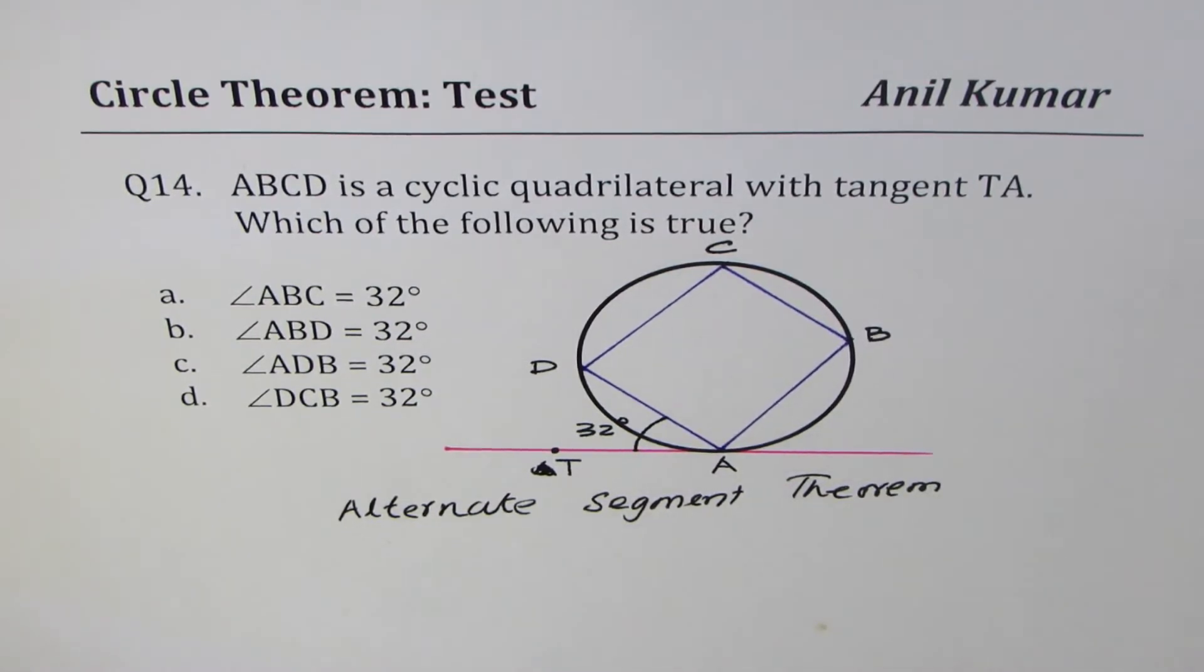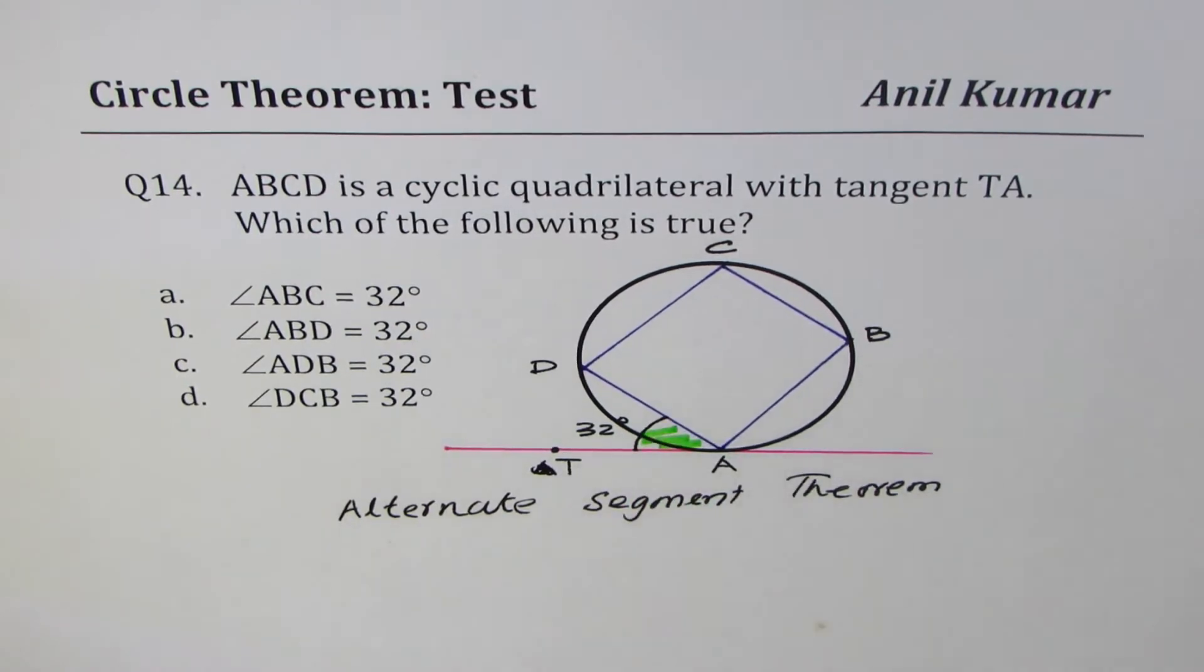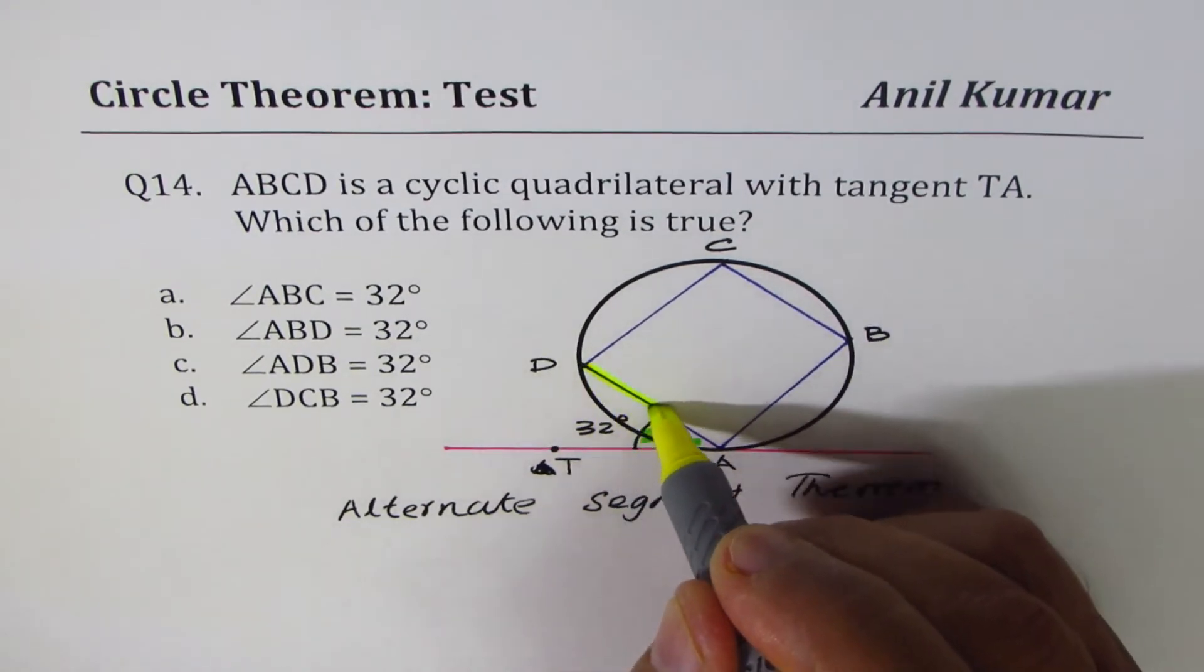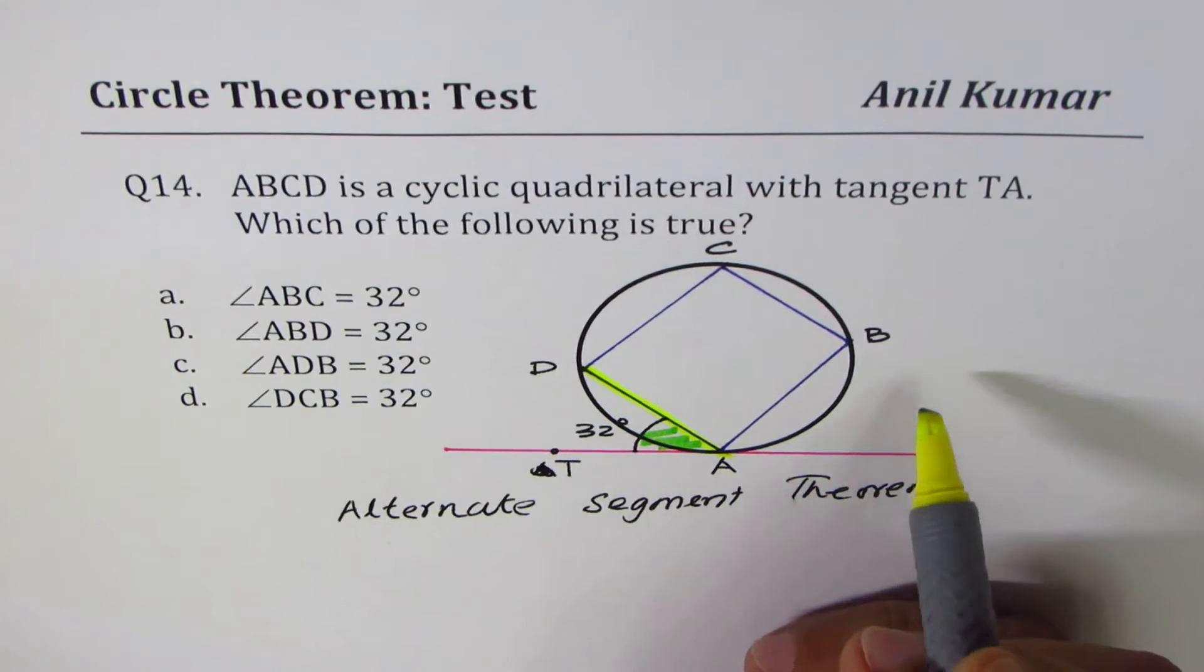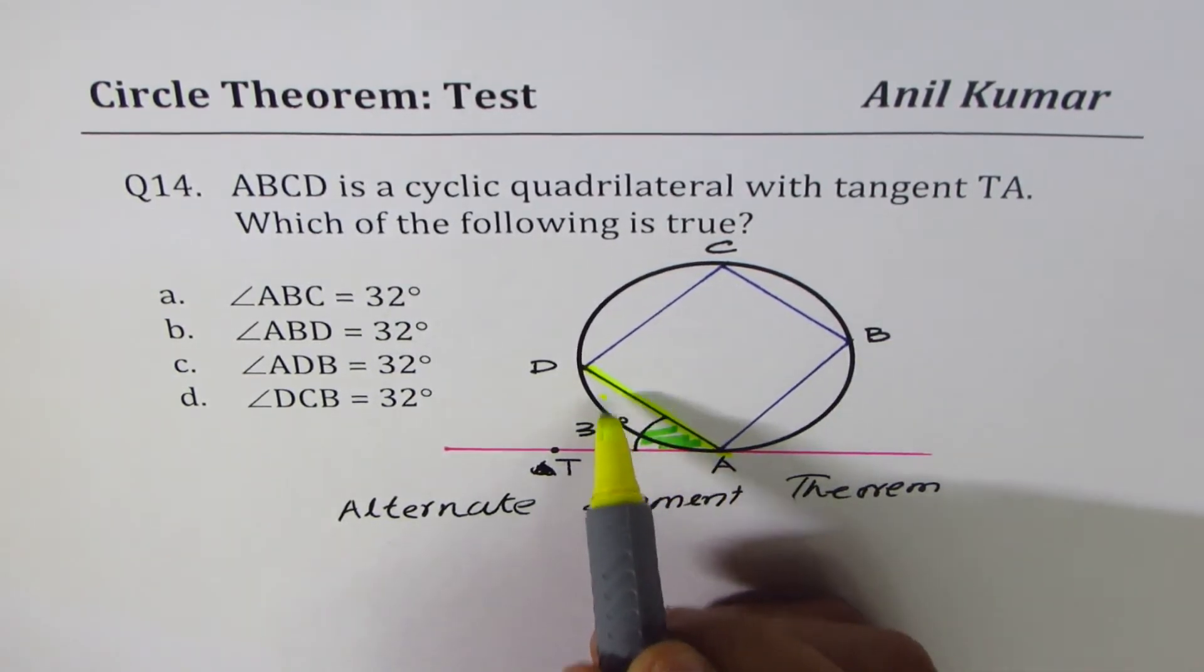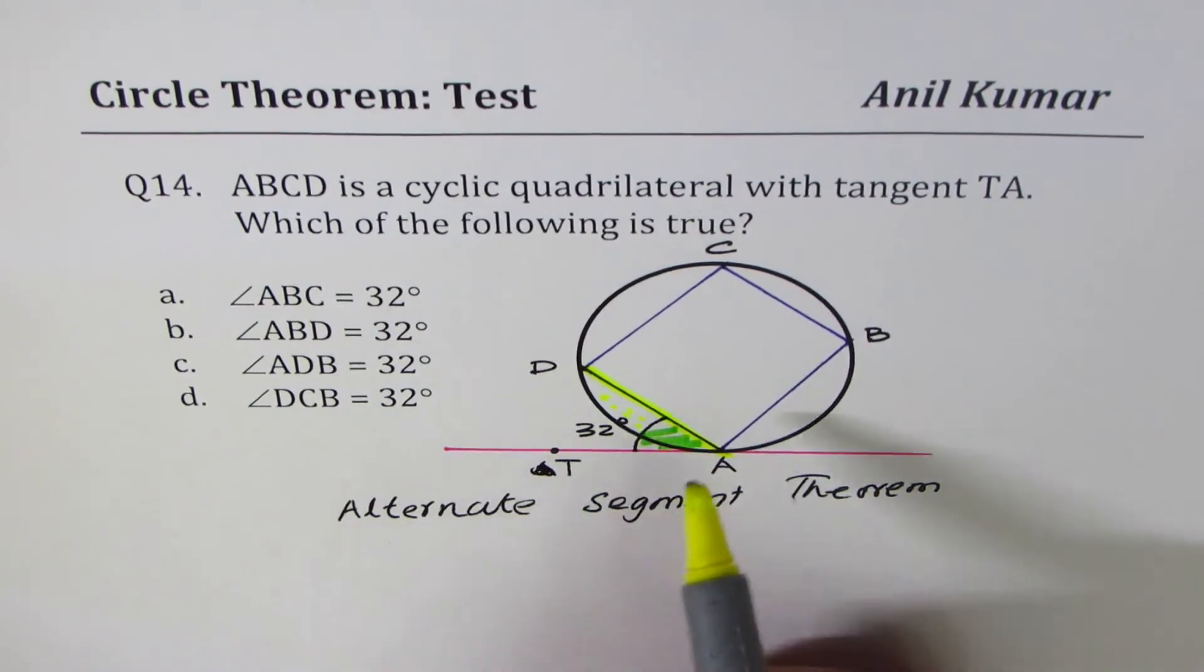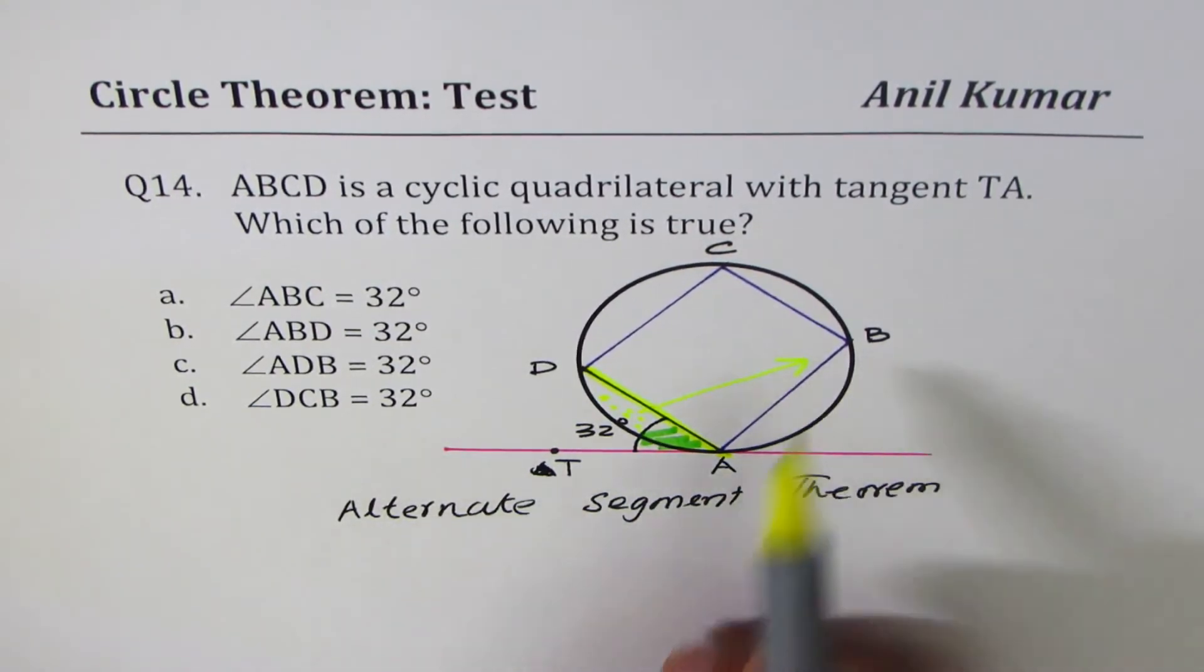As per this theorem, the angle between the chord—the chord is DA for us—is equal to the alternate segment angle, which, if you see this particular segment, is opposite to that. To get to that angle,